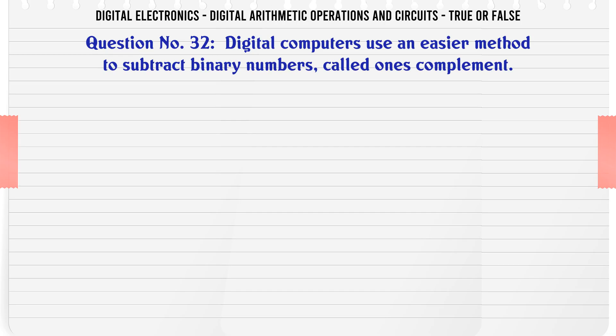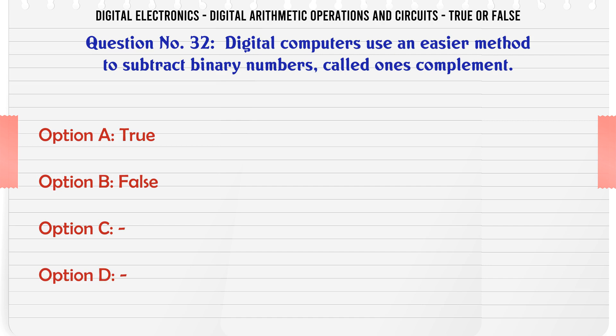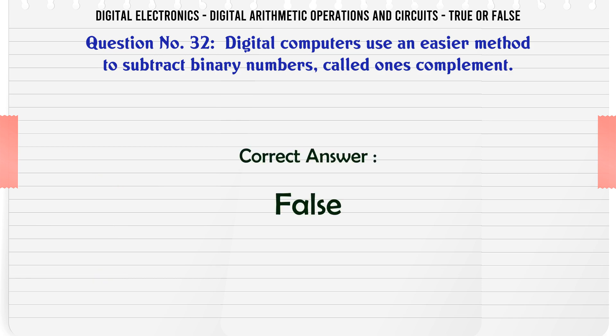Digital computers use an easier method to subtract binary numbers called one's complement. True or False? The correct answer is False.